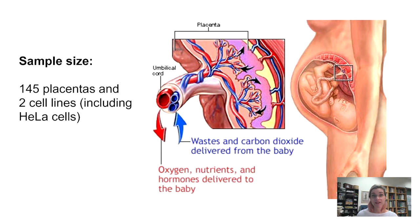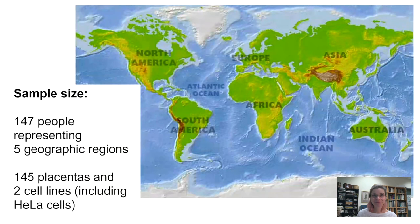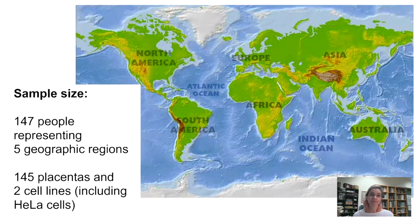They got tissue samples from 145 placentas and from two cell lines — one of which was the HeLa cell line, which you should be getting familiar with through reading The Immortal Life of Henrietta Lacks. Cann, Wilson, and Stoneking were interested in understanding human genetic variation on a global scale, so they got placental samples from women representing five major geographic regions: Africa, Asia, Australia, New Guinea, and Europe.